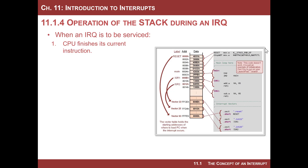That's important because we're going to interrupt the program — we're going to say stop for a second and come over here and handle this interrupt, so you need to know what the next instruction address is. We have to make sure that the CPU finishes that instruction so that the program counter is pointing at the right location. With that information, we can return to the main program and pick up where we left off.